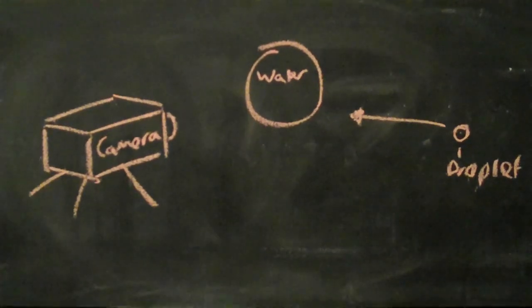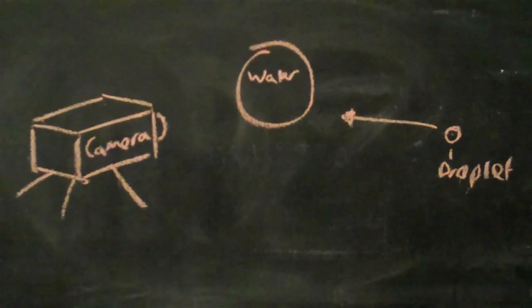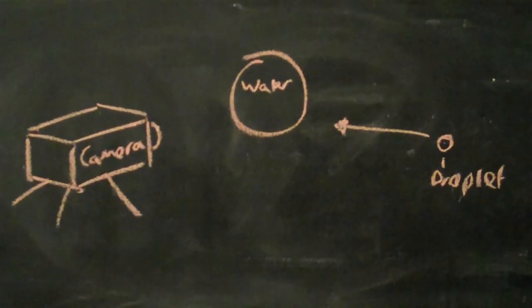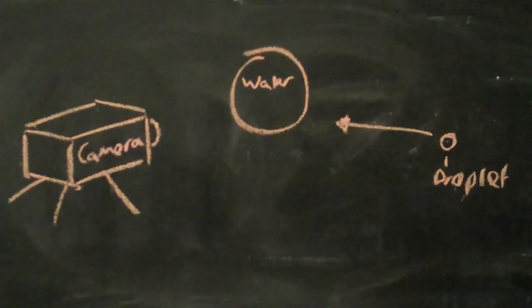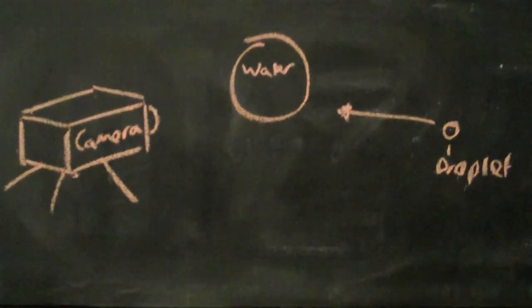By firing at known velocities, half milliliter droplets of water at the sphere of water, and knowing the sphere's radius, we can analyse footage to find properties of the wave, such as wavelength and phase speed.